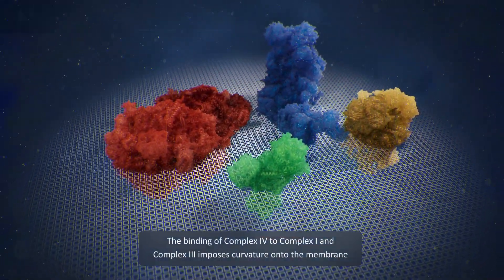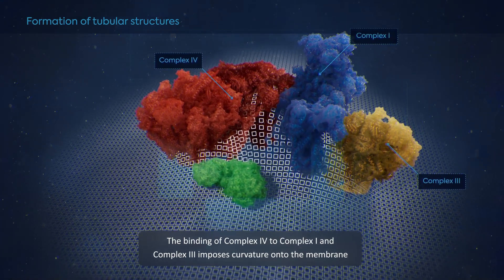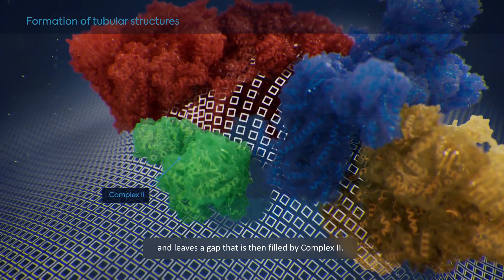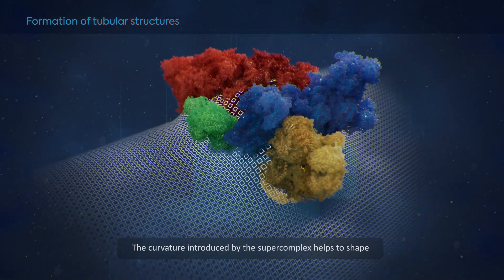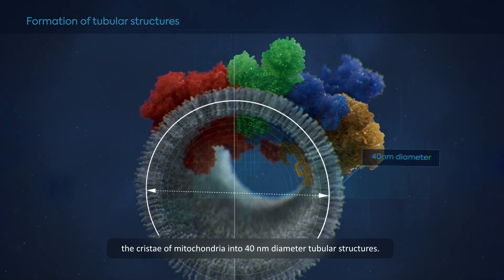The binding of complex 4 to complex 1 and complex 3 imposes curvature onto the membrane and leaves a gap that is then filled by complex 2. The curvature introduced by the supercomplex helps to shape the cristae of mitochondria into 14 nanometer diameter tubular structures.